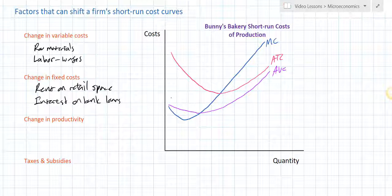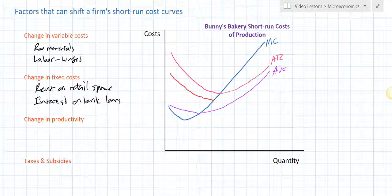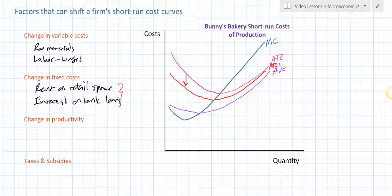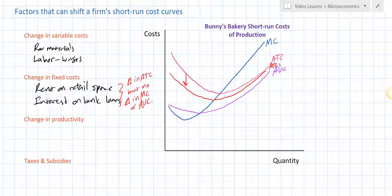Now if there's a change in fixed costs, we are not going to see any change in marginal cost or average variable cost. Let's assume that Bunny's rent decreases — she has to pay less rent each month. There will be a downward shift of her average total cost. So we'll see ATC decrease, but there will be no change in her marginal cost or her average variable cost. If there's a change in fixed cost, there will be a change in ATC but no change in MC or AVC.